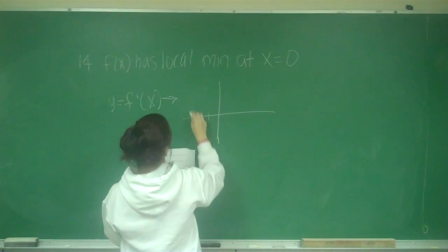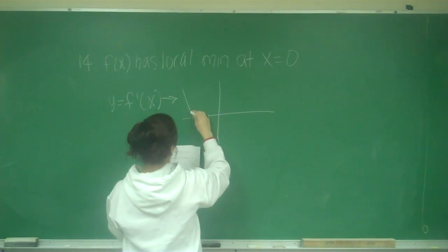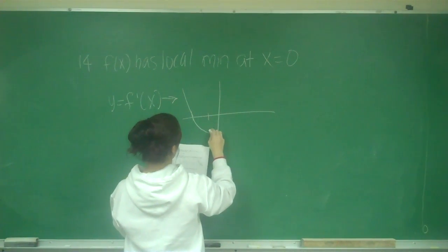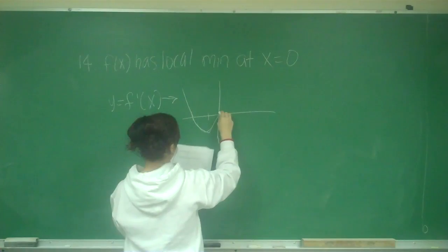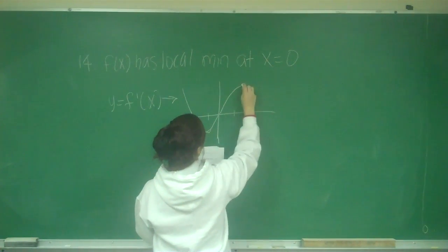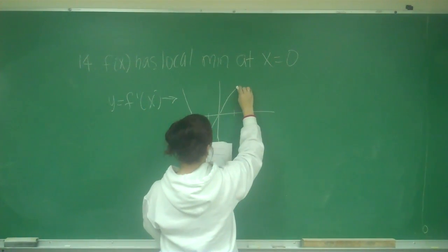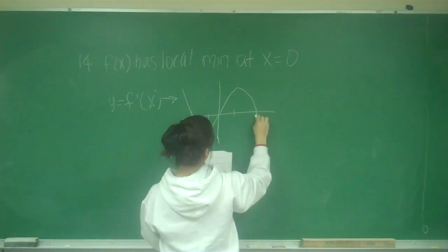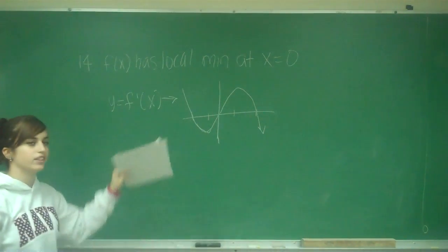At 2 it crosses, goes down at 1 through the origin, back up at 1, and then down at 2. So this is the graph of the derivative.